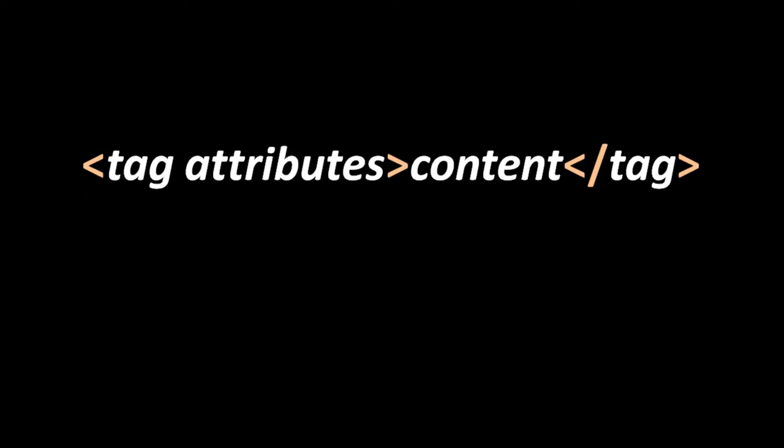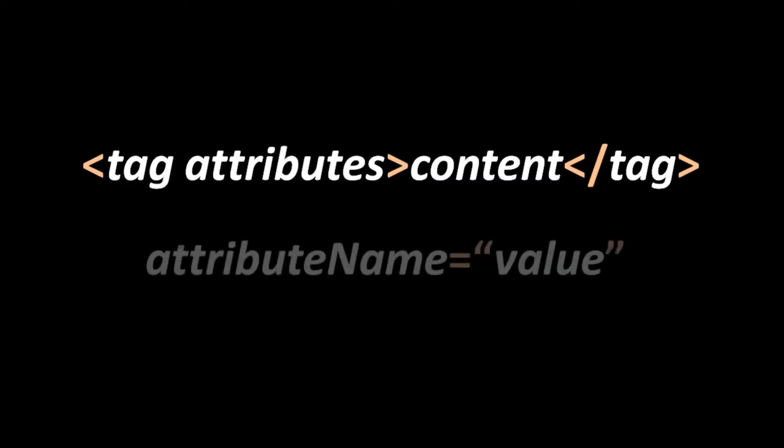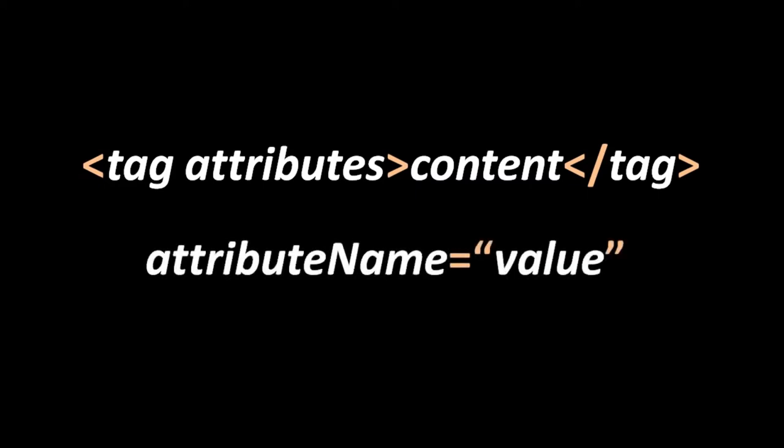Attributes are name-value pairs written with the name of the attribute, then an equal sign, and then the value in quotation marks. Tag attributes function basically like options or parameters for that tag. Which attributes a tag takes depends upon the type of the tag — some tags have multiple attributes, some have none; in some cases they're optional, sometimes they're required. If you give a tag multiple attributes, it doesn't matter what order you write them in.